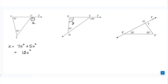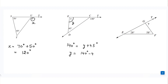In the second question, we need to find this interior angle, which we'll call y. The exterior angle is already given as 140°. We write: 140° equals the sum of the two opposite interior angles, so 140° = y + 45°. Therefore, y equals 140° minus 45°, which equals 95°.